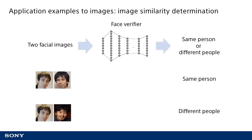Up to this point, the examples have used a single input image, but there is no particular need to limit it to just one. For example, it is possible to create an image similarity determination model that can determine whether two input facial images are pictures of the same person. This type of similarity determination model could be used as facial verification software to determine whether a face captured by a camera matches a facial image registered in advance.